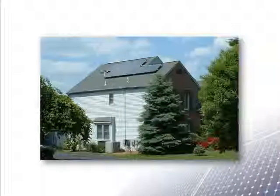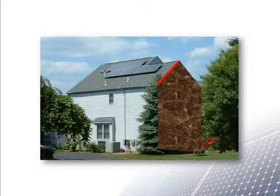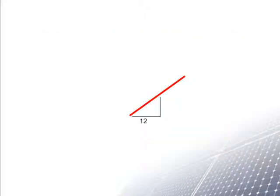How can we calculate the roof slope angle of this building? We measured that it is a 9/12 pitch roof. Plugging the rise of 9 inches and run of 12 inches in and taking the arc tangent gives a roof slope angle of 37 degrees.